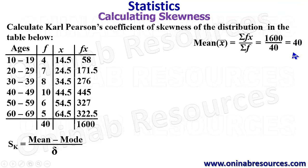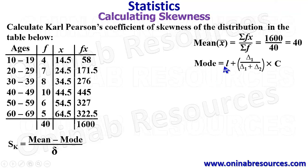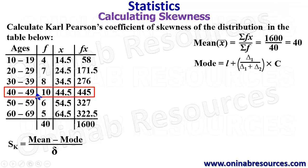We then go ahead to calculate the mode. The formula for the mode is L plus delta 1 over delta 1 plus delta 2, multiplied by C. We need to identify the modal class — that is the class with the highest frequency. The highest frequency here is 10, so the class is 40 to 49. From here we will be able to get our L, delta 1, delta 2, and C.